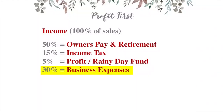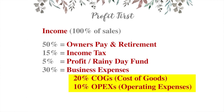These numbers are based on a business that makes two hundred and fifty thousand dollars or less. We're going to allocate thirty percent towards business expenses, broken into two categories: twenty percent to cost of goods and ten percent to operating expenses — those two numbers total thirty percent.